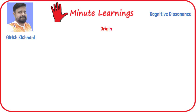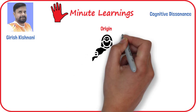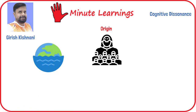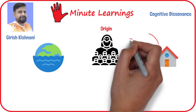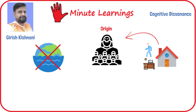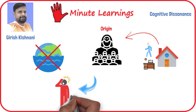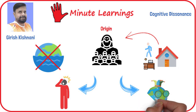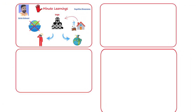The theory arises from a participant observation study of a cult that believed the earth was going to be destroyed by a flood. Members gave up their homes and jobs to work for the cult. But when the flood did not happen, the fringe members were more open to recognize that they had made fools of themselves and to put it down to experience, whereas the really committed members were more likely to reinterpret the evidence to show that they were right all along, and that the earth was not destroyed because of their faithfulness.